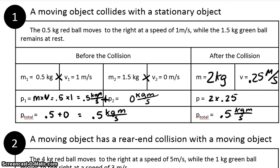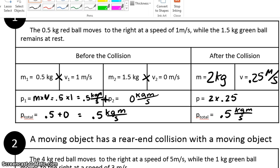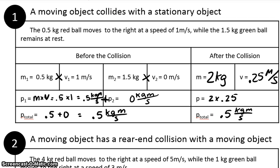Now there's something very important to notice here: the total momentum before the collision is equal to the total momentum after the collision. The momentum that we started with is equal to the momentum that we ended with. All of the momentum was conserved.